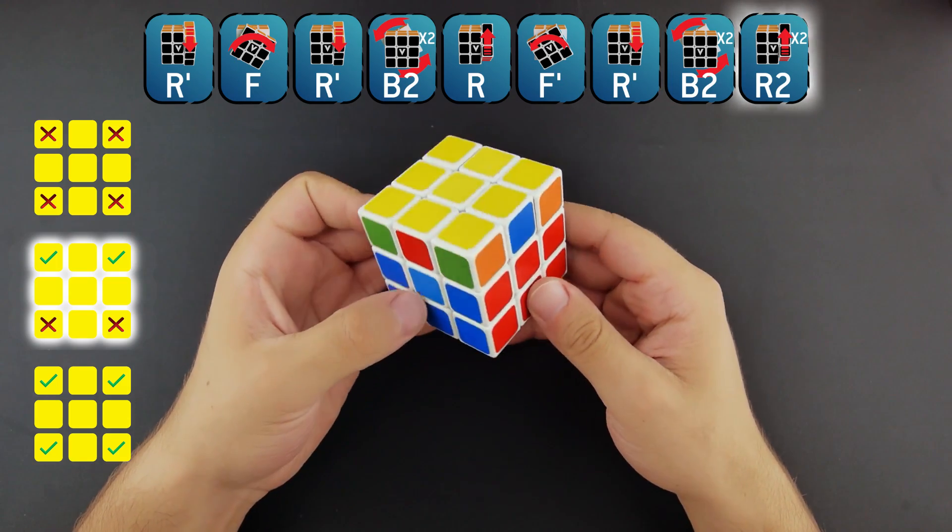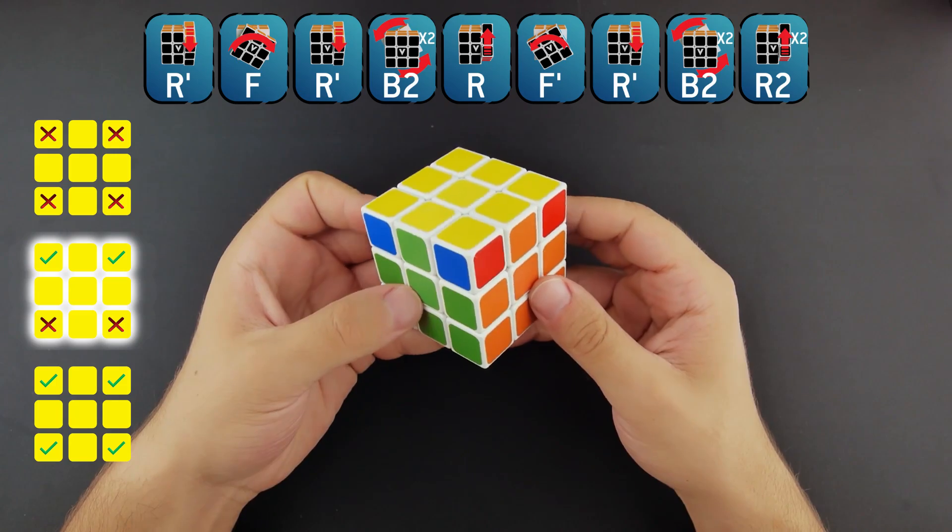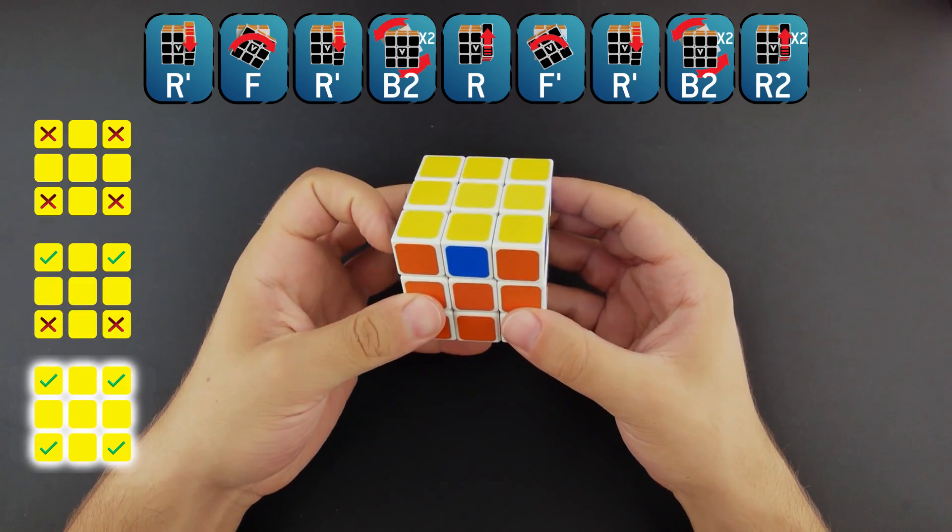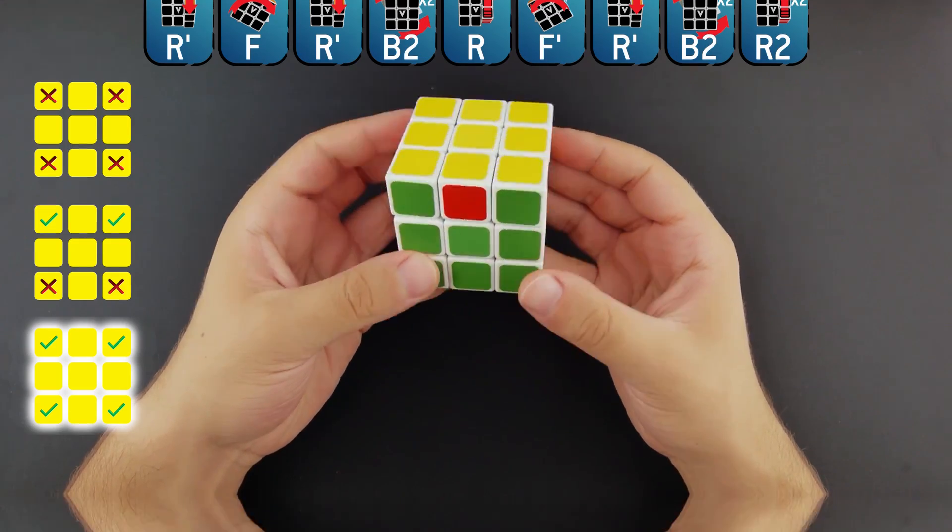At this point, you might need to do the algorithm one more time to solve the corners. Now, we only have to align them with the rest of the cube and go to the next step. Or even better, the final step.